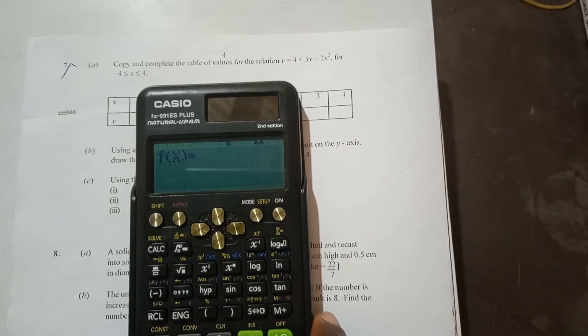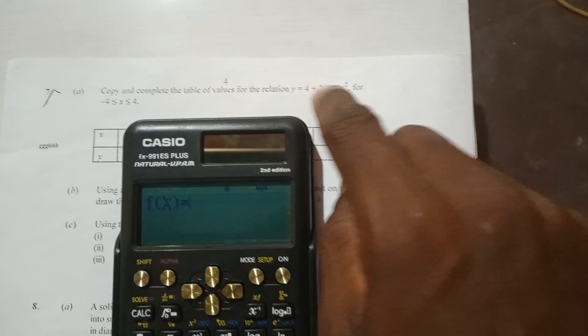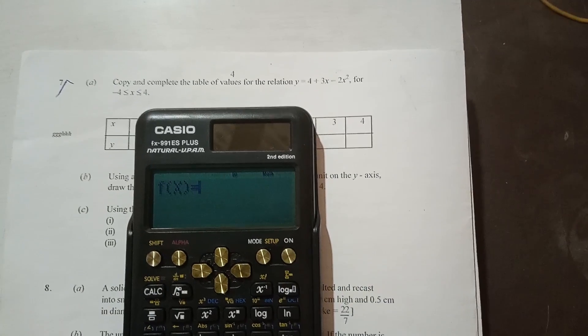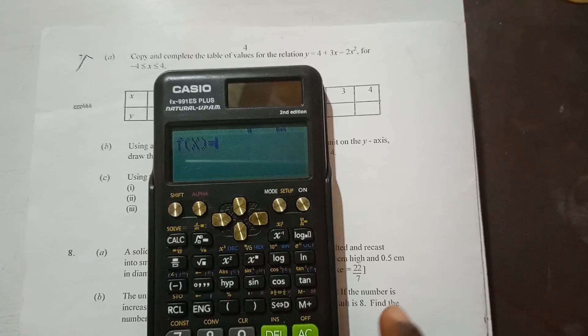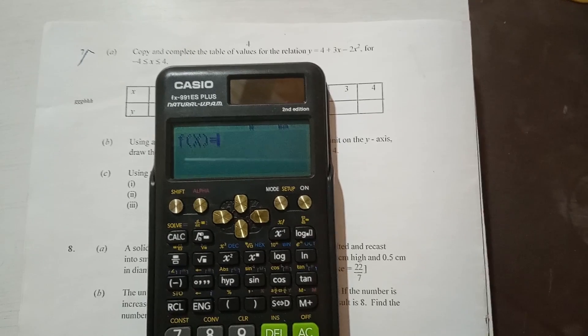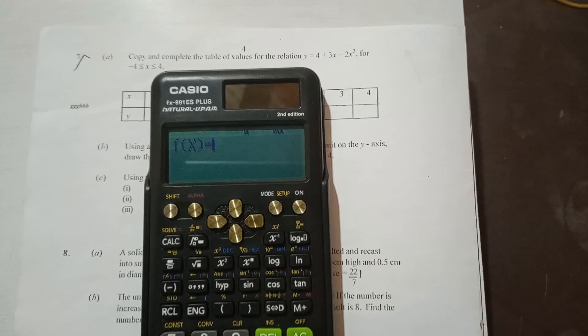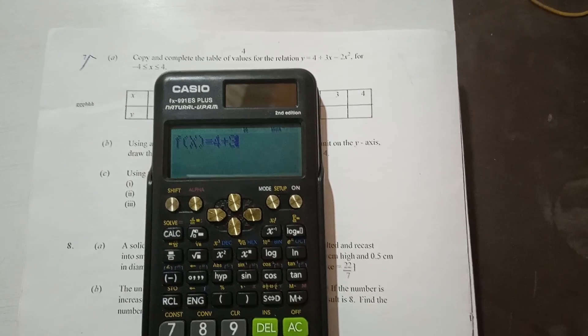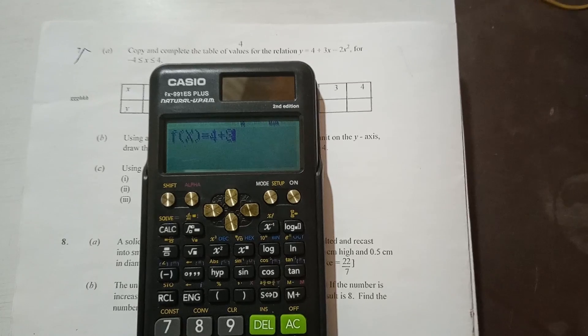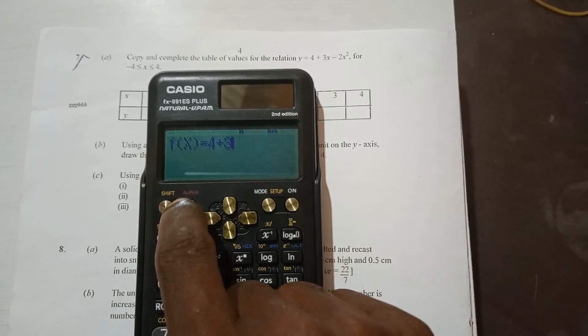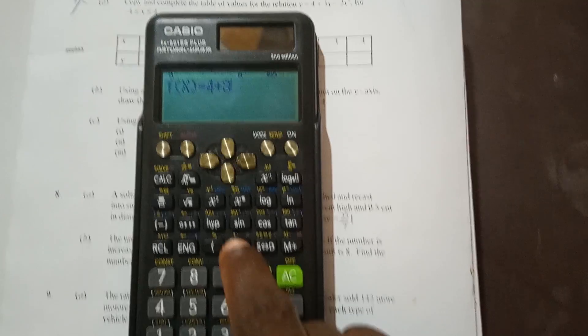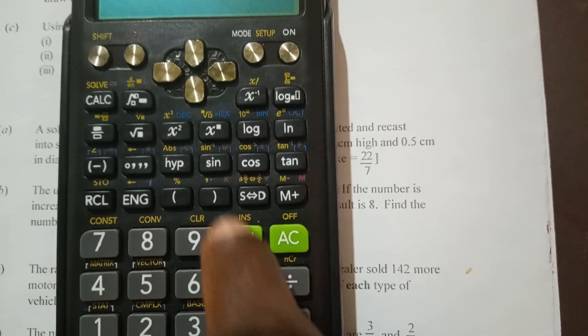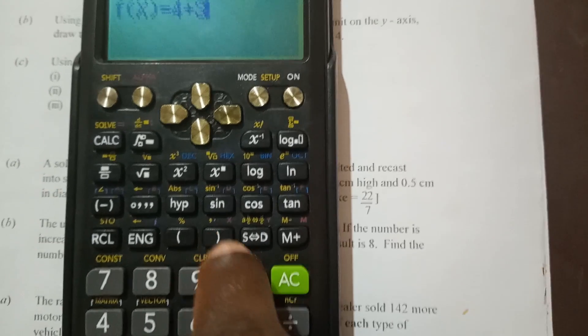Now we are going to enter this relation into the calculator. So y is the same as f of x, so we start from 4. You enter 4 plus 3x. The x is an alphabet, so we use the alpha key. You press alpha, then x is here, the closing parenthesis here. So you press this one.